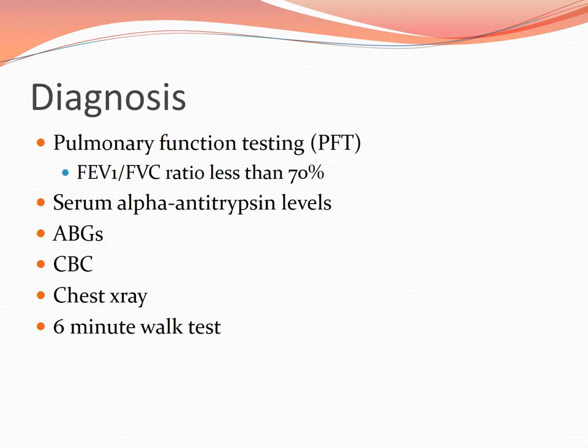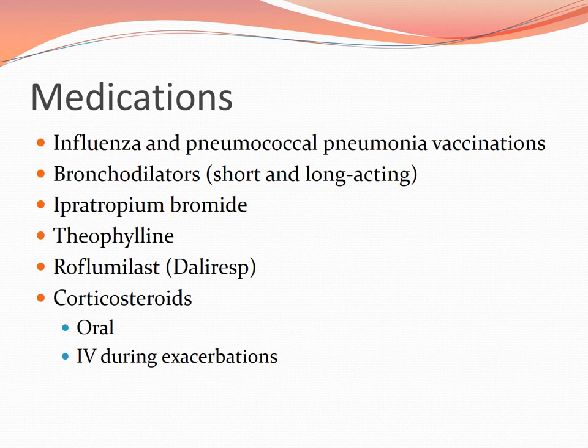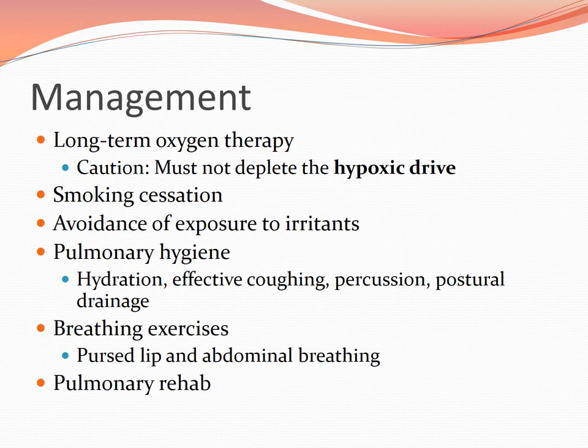Anyone with breathing issues should receive the flu and pneumonia vaccines. Medications include bronchodilators, ipratropium bromide, theophylline, and corticosteroids. We try to avoid daily steroids, but for exacerbations we give IV corticosteroids like Solu-Medrol. When patients go home they receive a tapering dose of steroids to get over the hump until they feel better. Long-term oxygen therapy should not exceed what's needed as excess oxygen will deplete the hypoxic drive. No smoking — if there's a smoker in the home, ask them not to smoke.